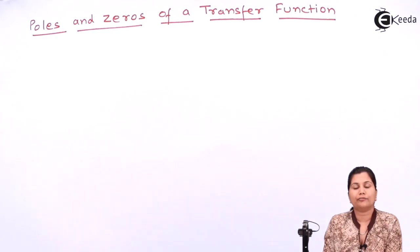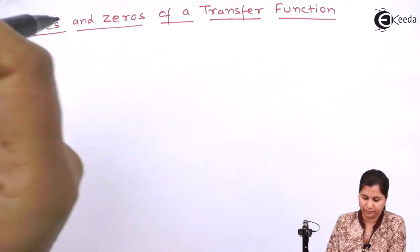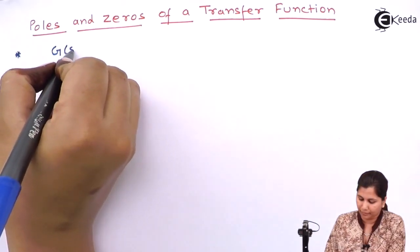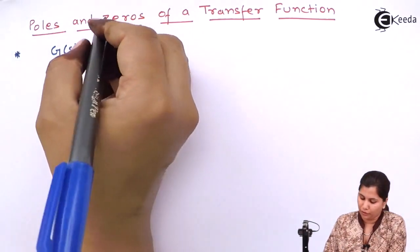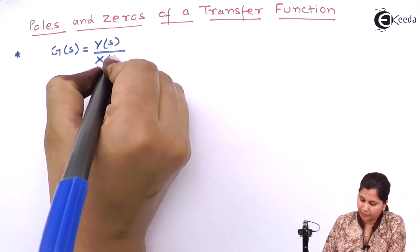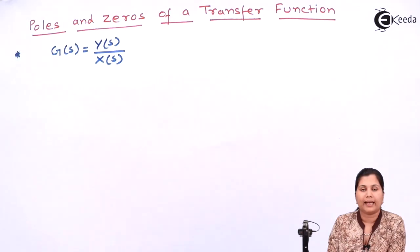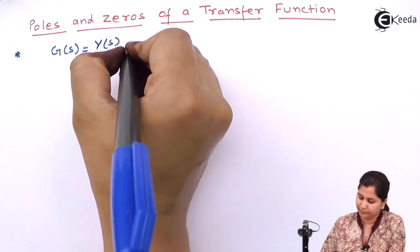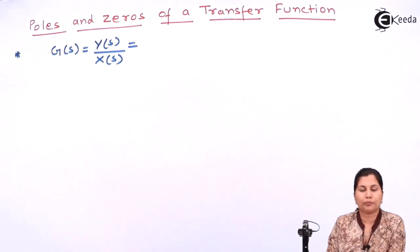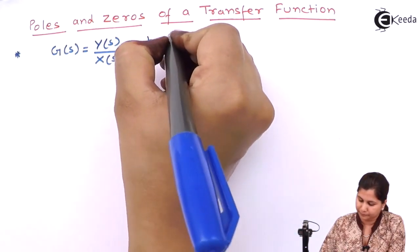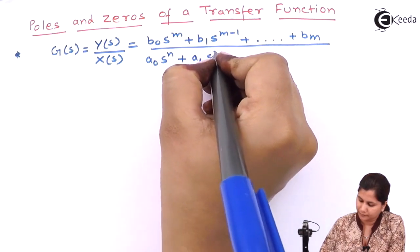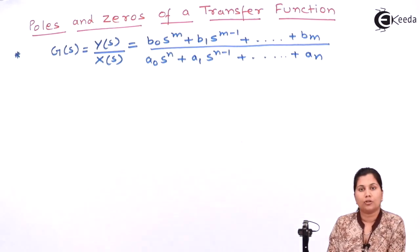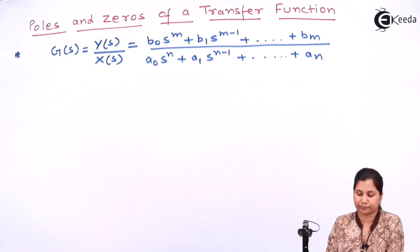Let us first write the formula for the transfer function. Transfer function G(S) is defined as the Laplace transform of the output divided by the Laplace transform of the input, so it is Y(S) by X(S). If we write it in the differential equation form, then it will be the Laplace transform of the output. This is the representation of a transfer function.